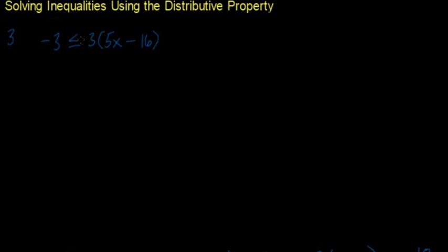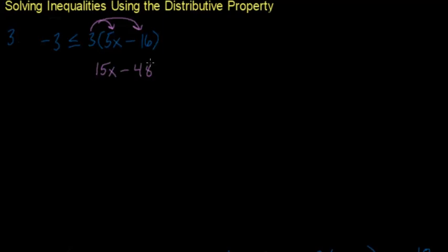For our third example, we have negative three is less than or equal to three times the quantity five x minus 16. The variable is on the right-hand side, but we still need to use the distributive property. We multiply three times five x to get 15x, and three times negative 16 gives us minus 48. So we have negative three is less than or equal to 15x minus 48.